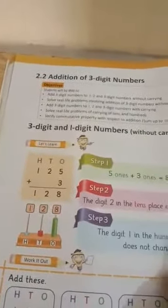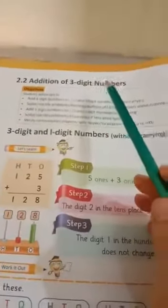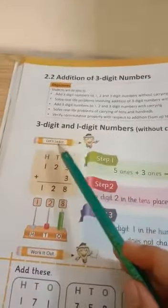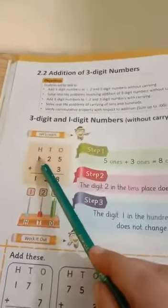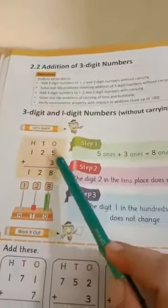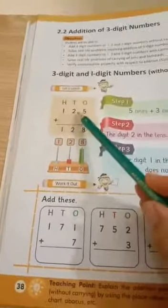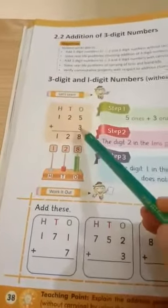Exercise 2.2. Addition of 3-digit numbers. Pahle hum ne kitne digit number ki addition ki thi? 2-digit number ki. Now we have 1, 2, 3. 3-digit numbers. You see in the picture we have 3-digit number. Addition of 3-digit number.